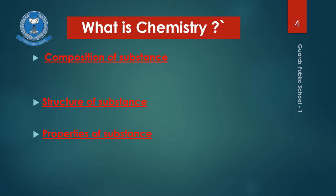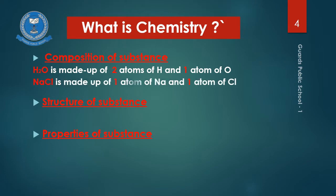The first part is composition of the substance. I'll explain it by taking the example of water molecules and sodium chloride. A water molecule is made up of two atoms of hydrogen and one atom of oxygen. Similarly, sodium chloride is made up of one atom of sodium and one atom of chlorine. It is very clear from the formula what the composition of a substance means.